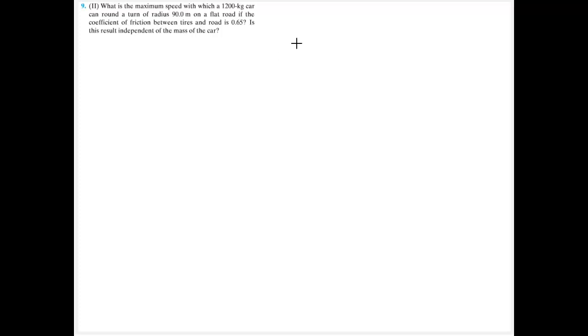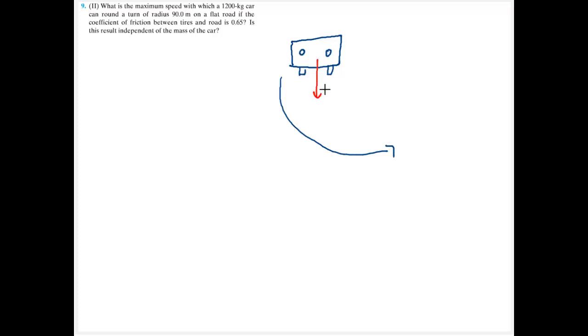For problem number 9, we have a car going around a turn with some radius. I know the coefficient of friction and I'm asked how fast can the car go around this 90-meter turn. Here's my car, and we're looking at it head-on. The car is going to turn towards the right side of the screen.